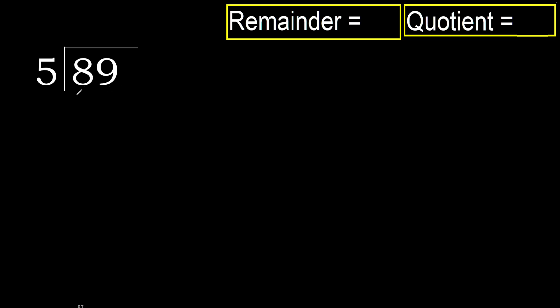89 divided by 5. 8 is not less, therefore with 8: 5 multiplied by which number is nearest to 8 but not greater? 5 multiplied by 2 is 10 — 10 is greater. Multiplied by 1 is 5 — is not greater. Ok, subtract 3.